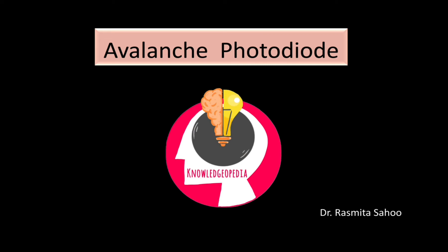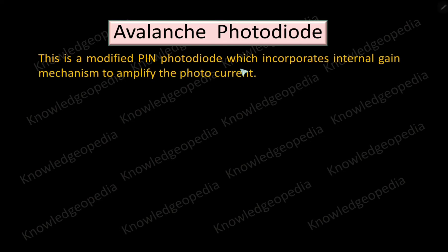Hello friends, today we will be discussing the avalanche photodiode. Before this, we have seen the PN photodiode and PIN photodiode. Today we will see an advanced or improved photodiode — the avalanche photodiode. This is a modified PIN photodiode which incorporates an internal gain mechanism to amplify the photocurrent. We will see how this PIN photodiode is improvised to get some internal gain in the device, which in turn gives us a high output.